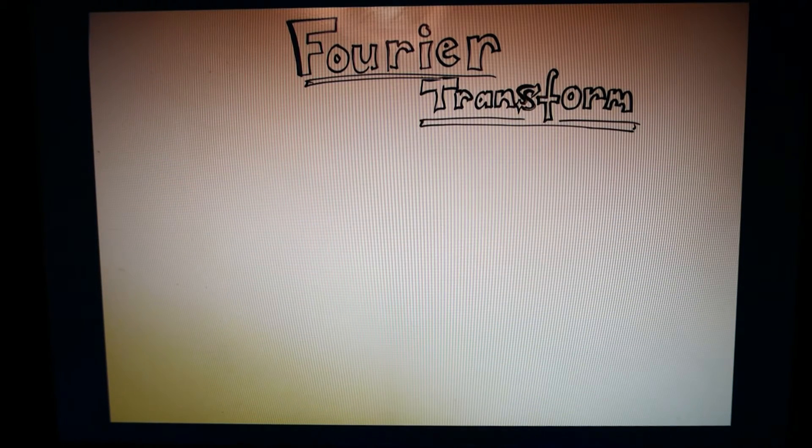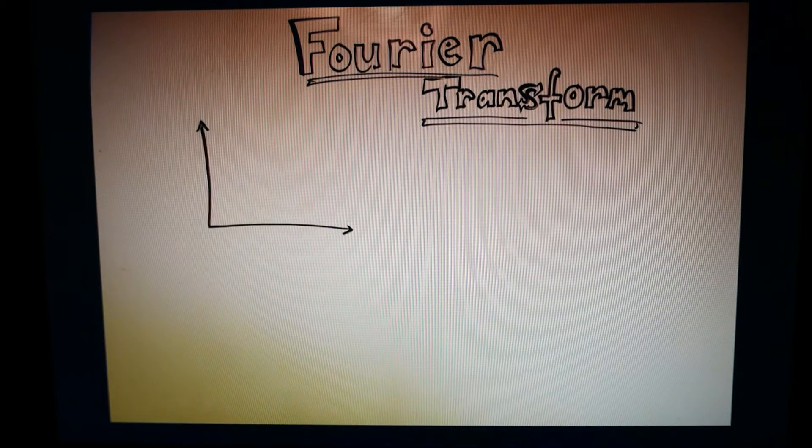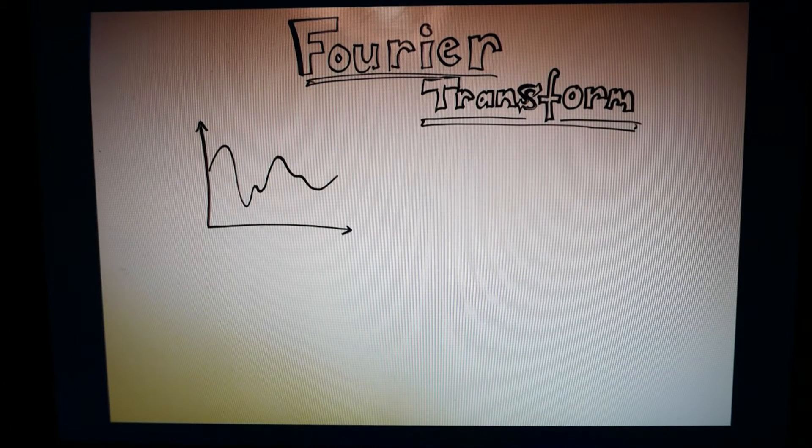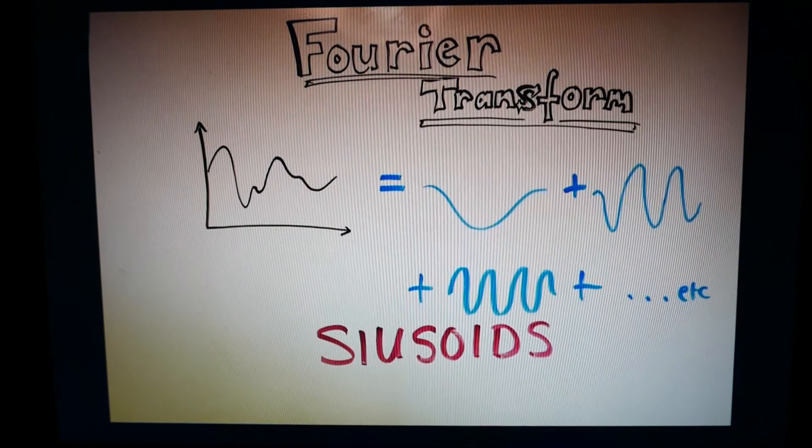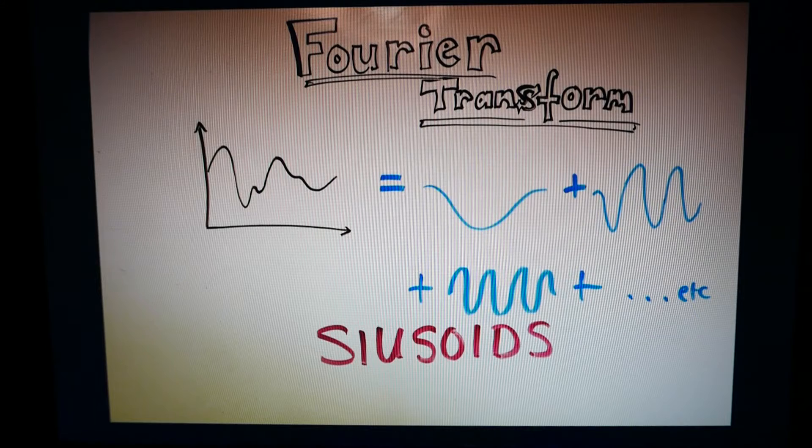In its most basic form, the Fourier transform breaks down a given waveform, whether it be a function of time, space, or some other variable, into sinusoids, which is just a fancy word for sine and cosine waves.